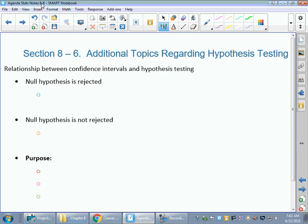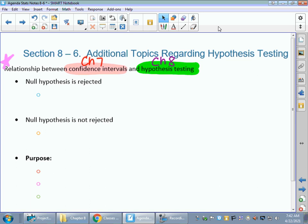It's called Additional Topics Regarding Hypothesis Testing. The notes should be relatively short. The idea is very large. Right here, this first thing, this is the relationship between confidence intervals and hypothesis testing. Well, confidence intervals was all of Chapter 7. Hypothesis testing was all of Chapter 8. We're bringing these two concepts, very big concepts, together and looking at the agreement between them.